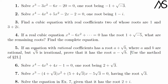If an equation with rational coefficients has a root a plus √b, where a and b are rational but √b is irrational, prove that it also has the root a minus √b.